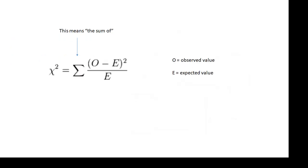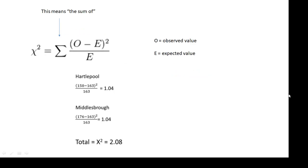How do you work out the chi-squared value? You use this equation. The chi-squared value — that's what we want — is: O is an observed value, E is an expected value, and the sigma symbol means add them up. So for each of the values, you work out the observed value minus the expected value, you square it, then you divide it by the expected value, then you add them all up. That is your chi-squared value. Chi-squared equals the sum of (O minus E) squared divided by E.